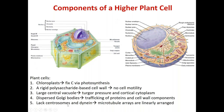Some other interesting features: plants lack centrosomes — the organelle consisting of centrioles that is the major microtubule nucleation center. There are no centrosomes in plants, and there's also no dynein in plants. So the microtubule arrays are linearly organized and not radially organized, as you see in animal cells.